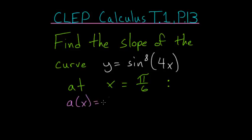a of x equals 4x, that would be the innermost function. b of x equals sine of x, is the middle function.